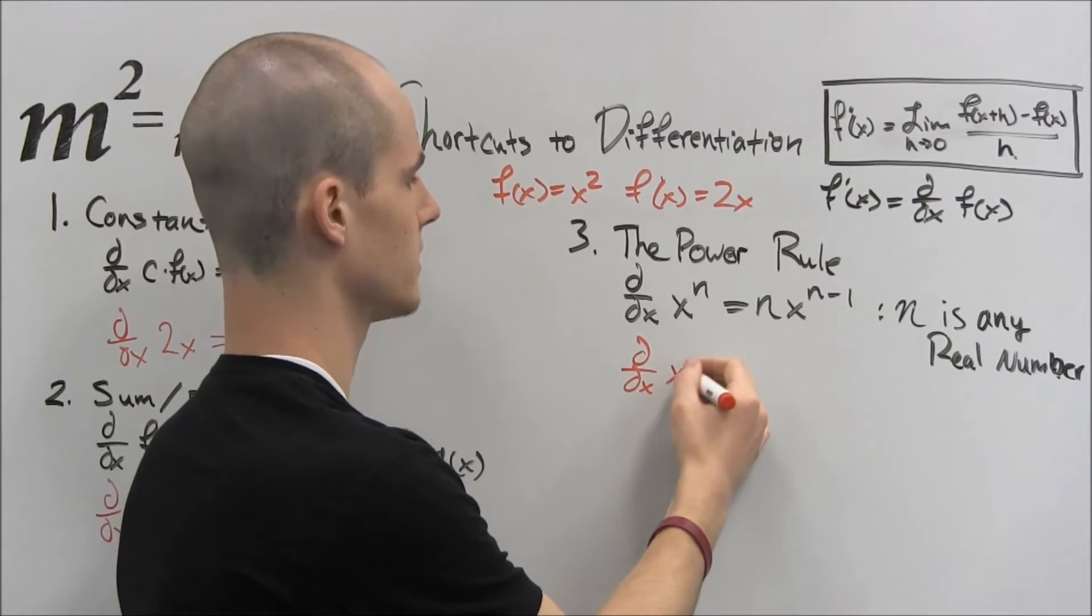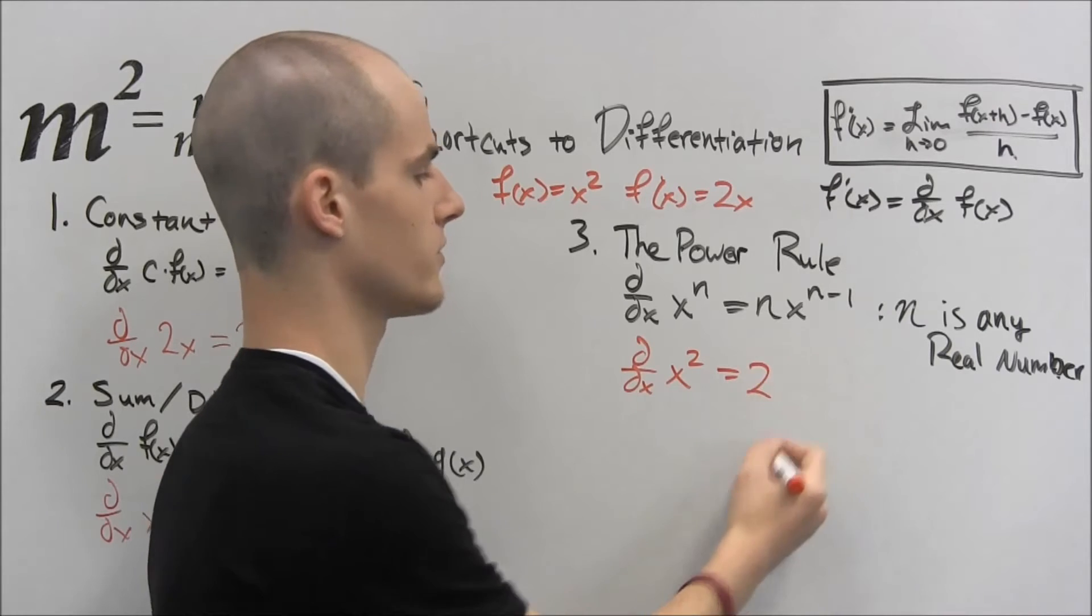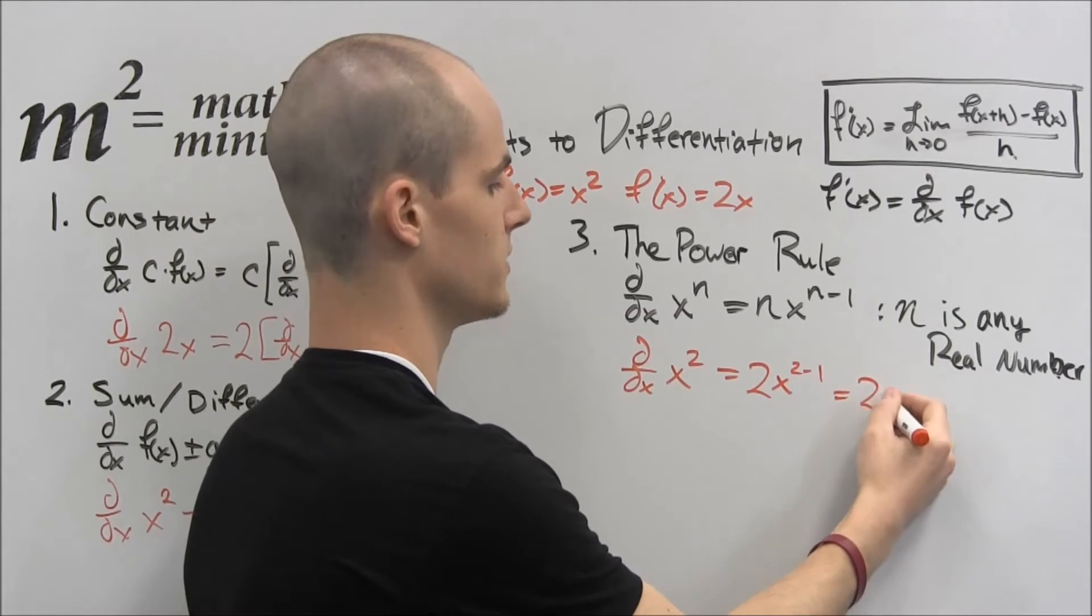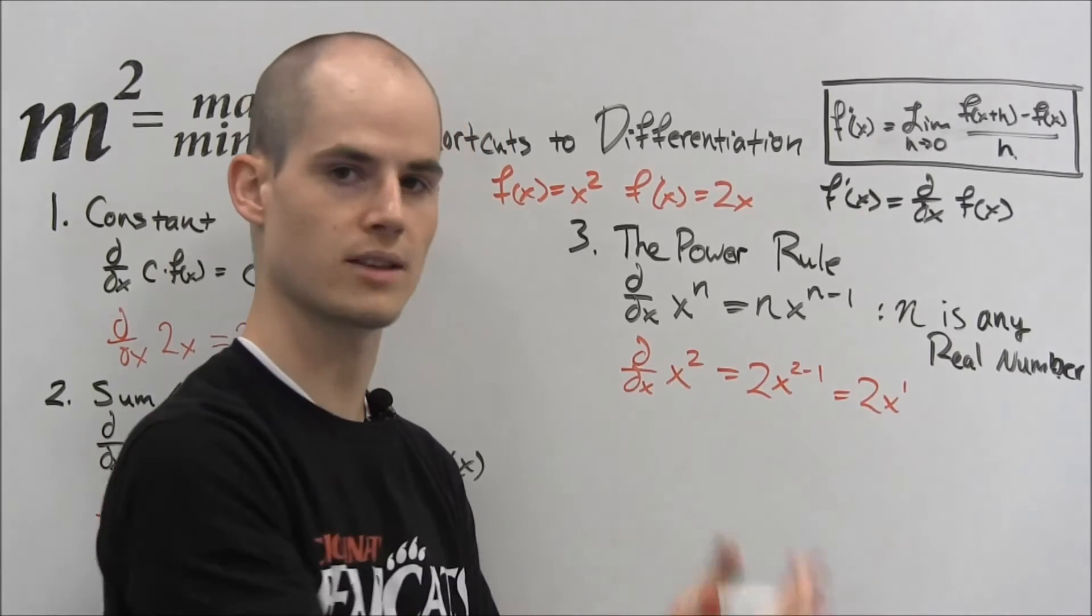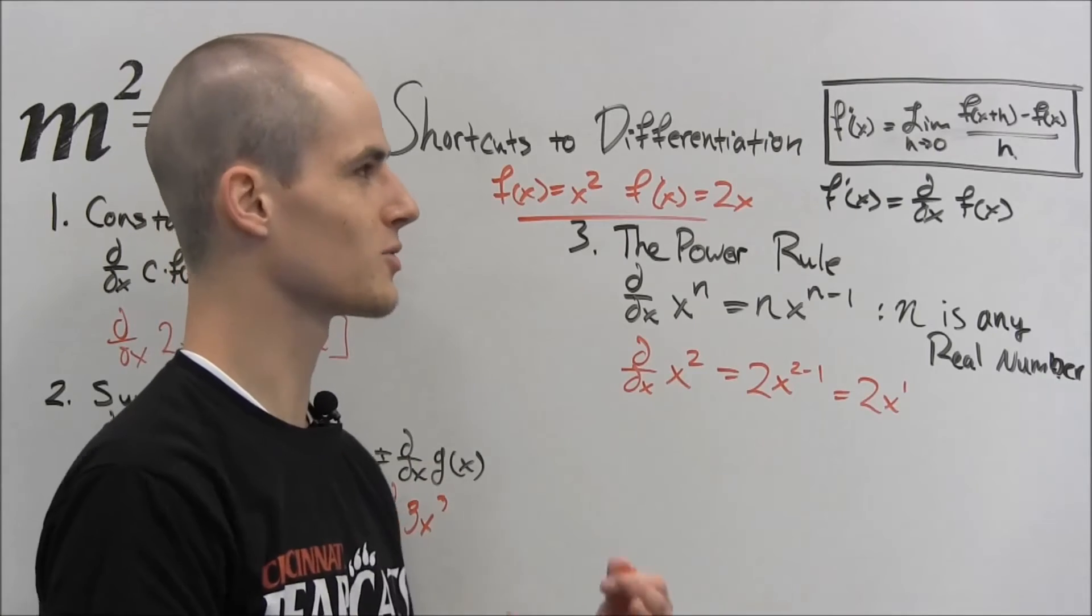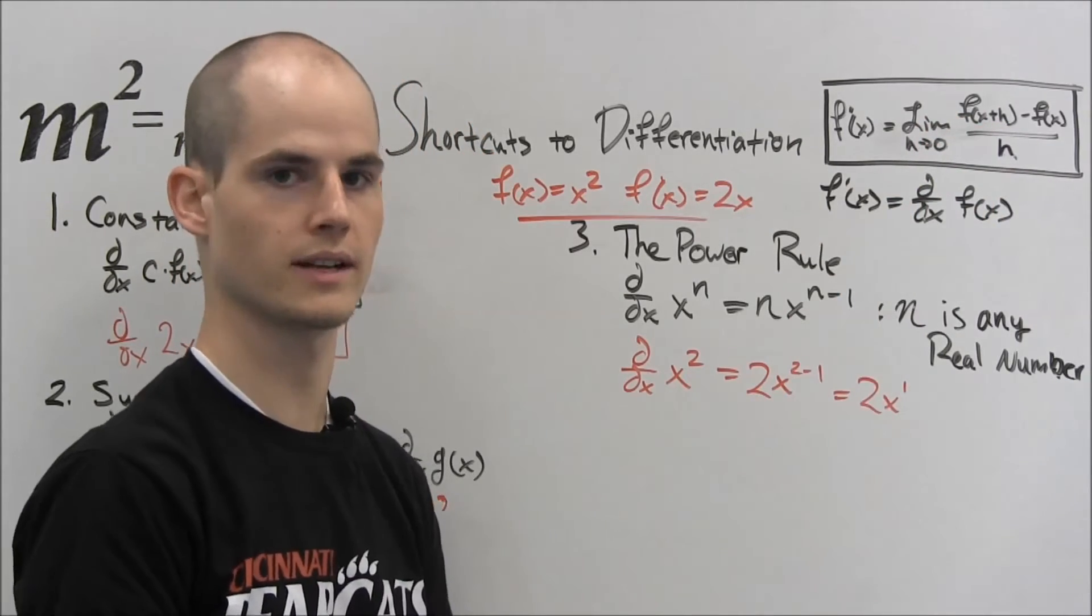d by dx of x squared. What this says is we bring this 2 down in front and then lower the power. So this just equals 2 times x to the 1 or 2x. So that's been proven. So what this is, is this is a really fast way to use this method, just jump to the final answer.